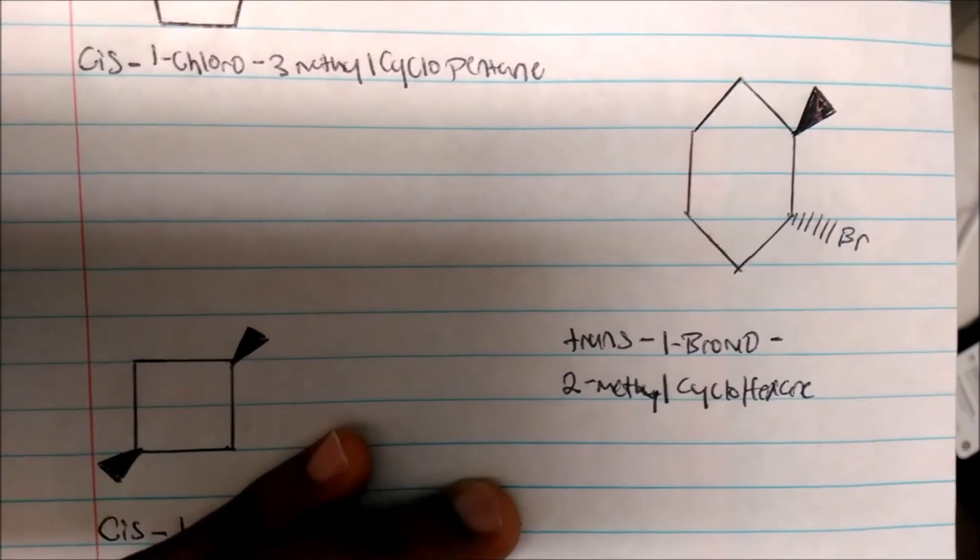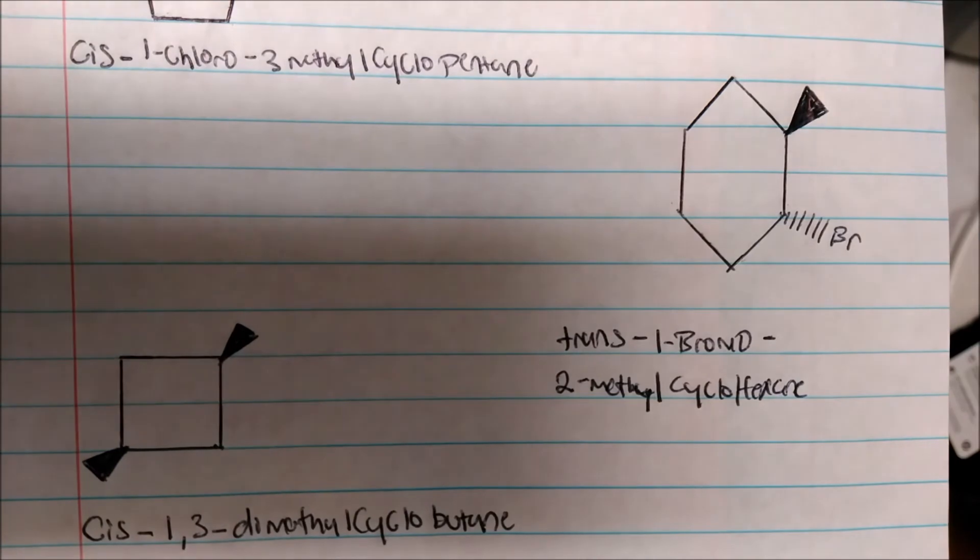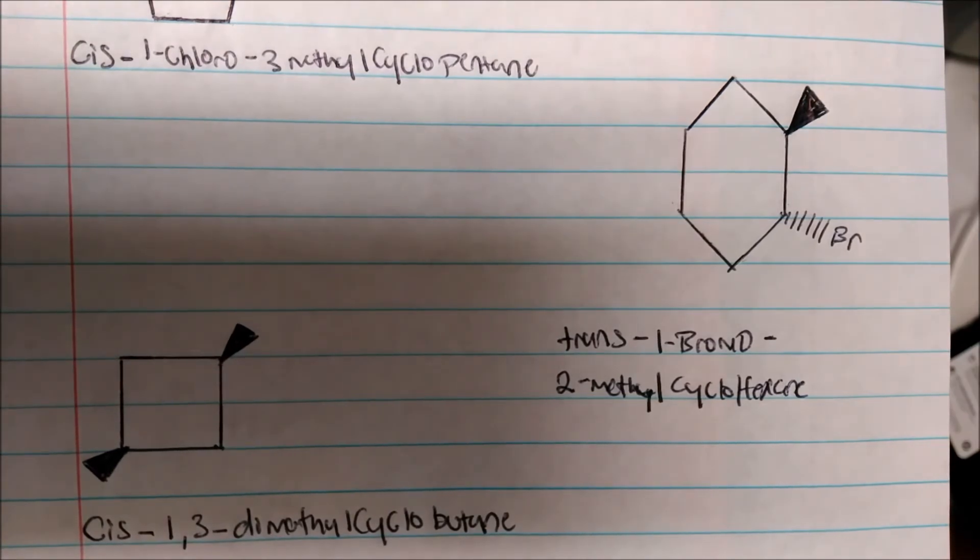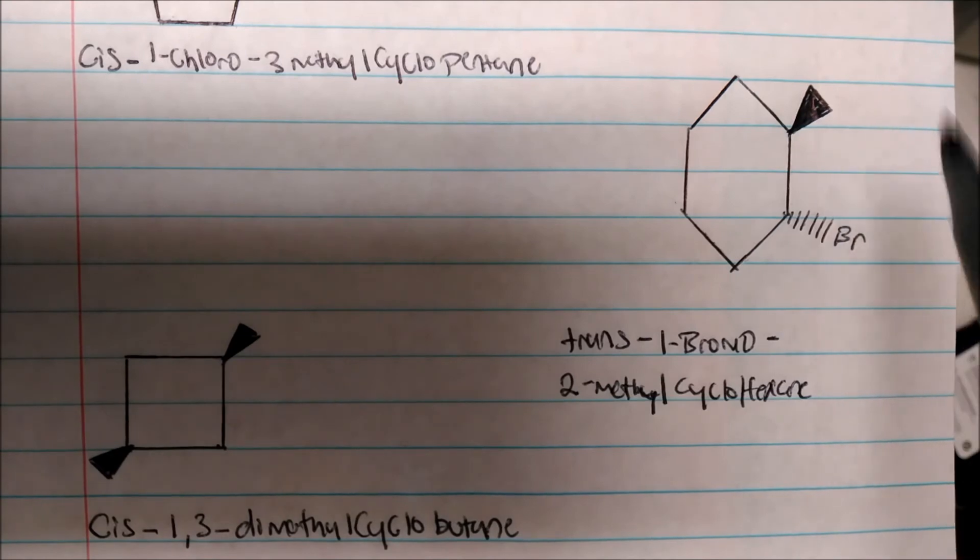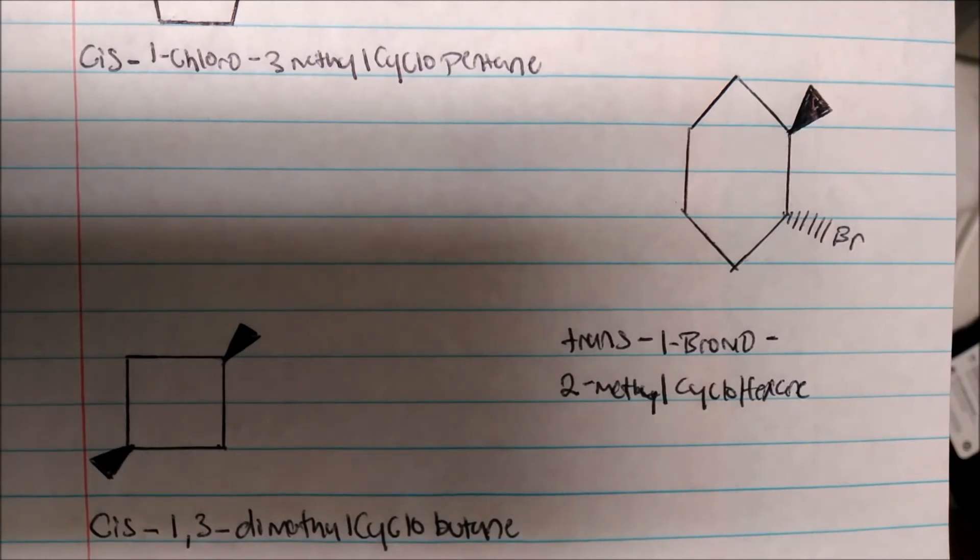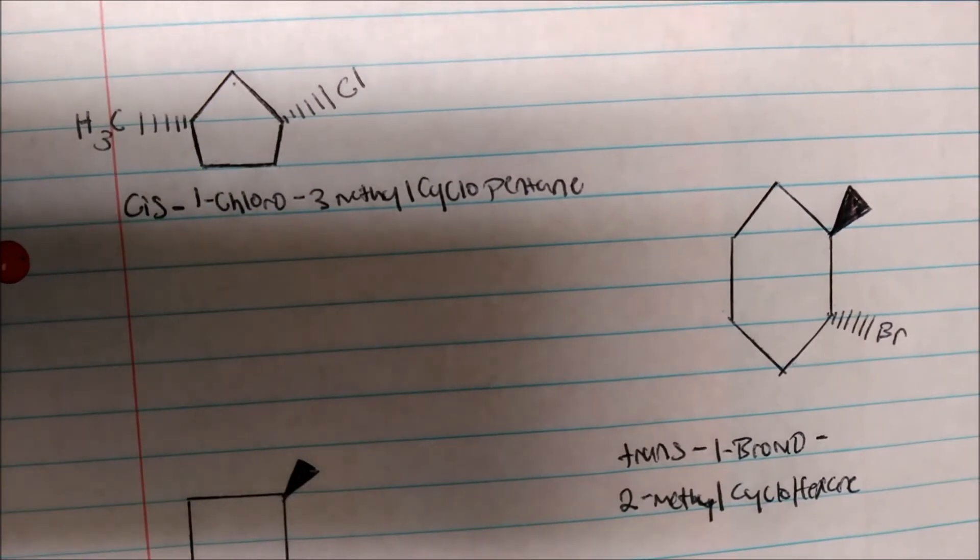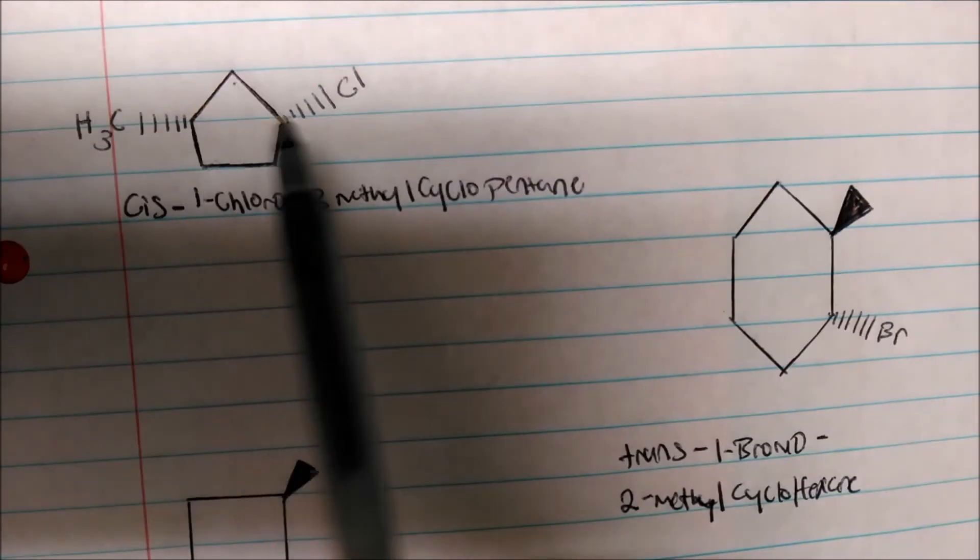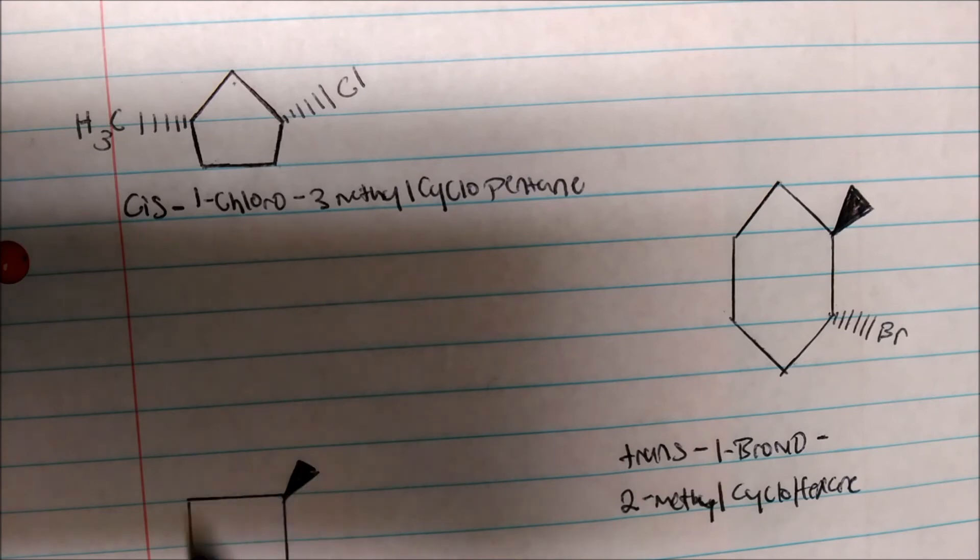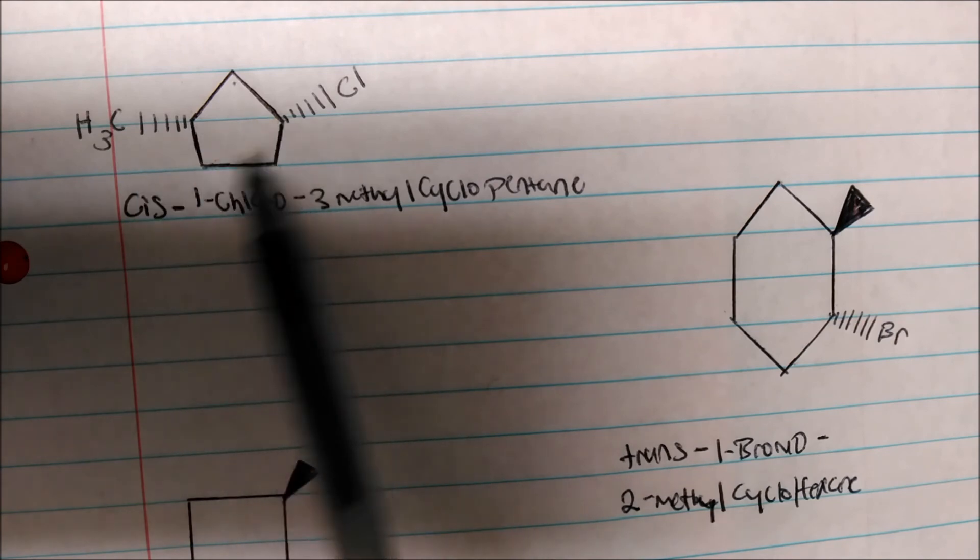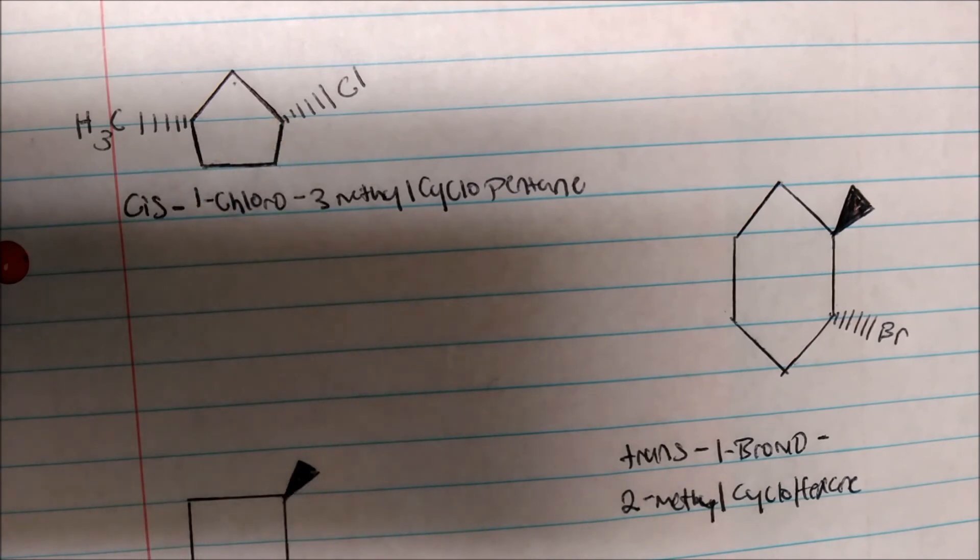And that's all it is to name cyclic cis-trans isomers. If there are wedges and dashes in your structure, then that will be trans. Anything that matches, so wedge and a wedge, dash and a dash, those will always be trans. Do not imply that because they're both going away or because you see wedges. Do not associate dashes with, okay, they're trans. Because having two dashes here is actually cis. As long as they match, that will be cis. Anything different, as in this case, will always be trans.